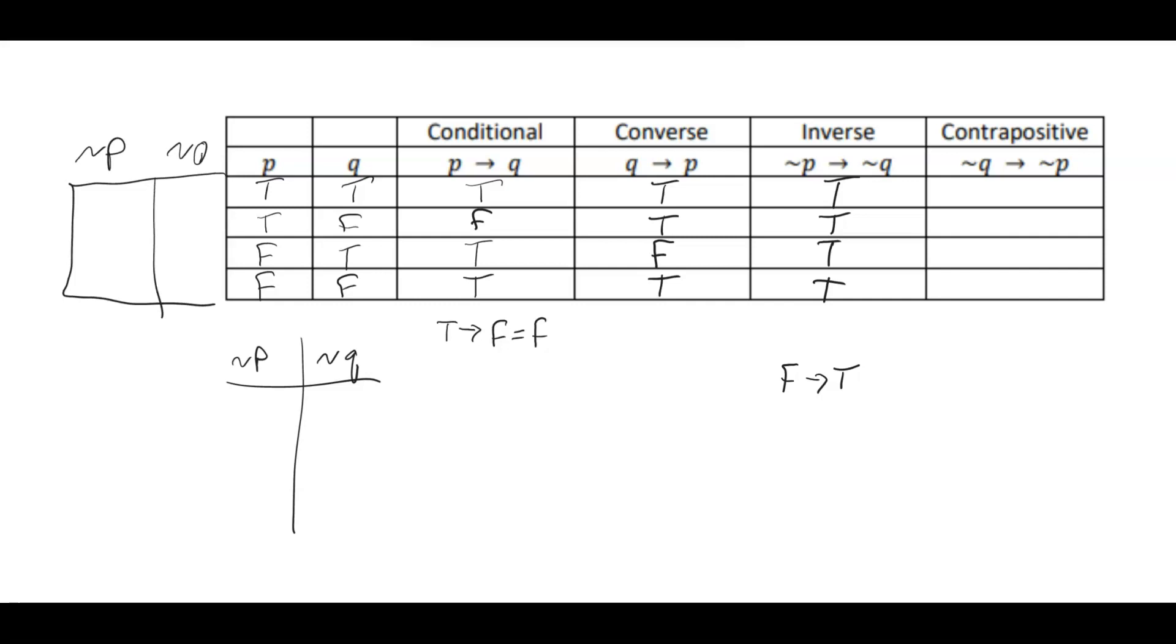Not P, not Q. So not P would be the opposite of P, so false, false, true, true. And not Q would be the opposite of Q, so false, true, false, true.